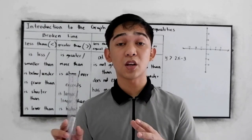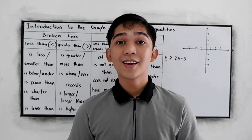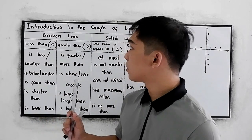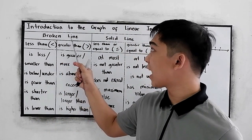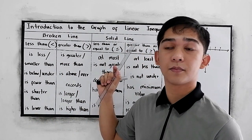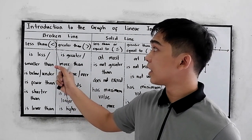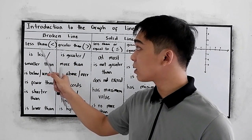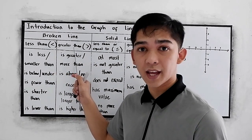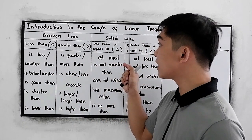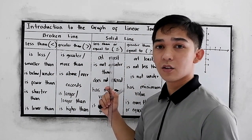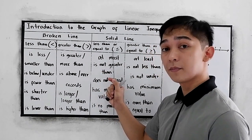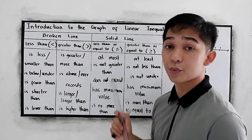In graphing linear inequalities, these are the things we need to know. To graph, we have the broken line and the solid line. We use the broken line if we have the less than or greater than symbol. We use the solid line if we have less than or equal to, or greater than or equal to.